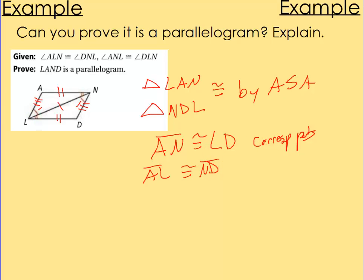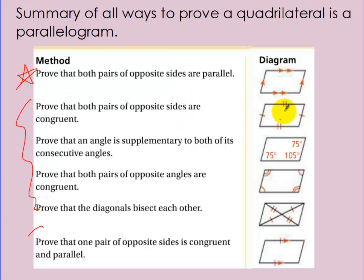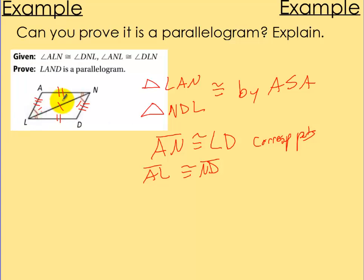Well, going back to my properties up here, if pairs of opposite sides are congruent, then we can say it's a parallelogram. I said this is congruent and this is congruent. Therefore, it's a parallelogram. That's one way I could have done that.